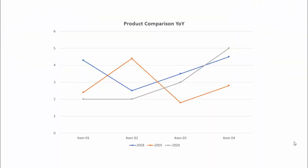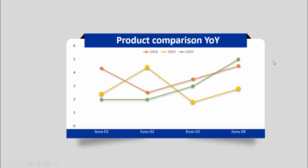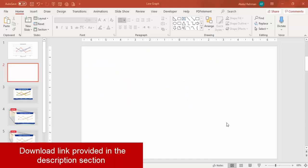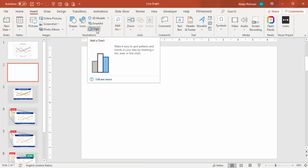In today's tutorial I am going to show you how to convert a line graph or line chart from something like this — a basic design — to something like this. I have added a good color combination, shadow effect, different colors, and bigger markers, so it is more easily understandable by the audience. Let's see how to do this. Add a new slide, go to Insert, and select Charts.